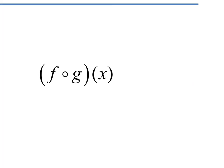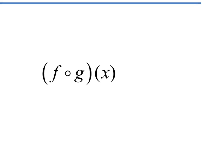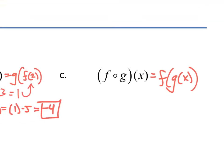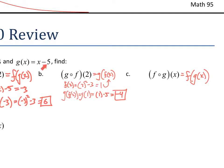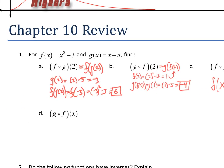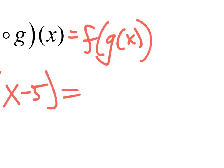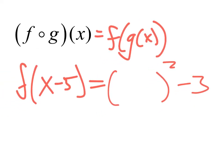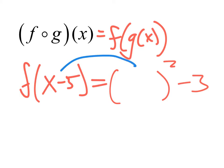Now, how about f of g of x — f composed of g of x? Since it's in terms of x and not a number, we take g, which is x minus 5, and plug that into f. You might find it useful to rewrite this as f of x minus 5. So x minus 5 is what g is, and we look at our f function, which is x squared minus 3.